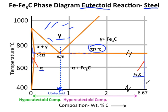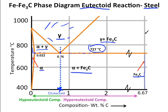Moving on to the two-phase regions: we have alpha plus gamma, gamma plus carbide, and alpha plus carbide. It is important to note that all of these regions — all five — are solids.